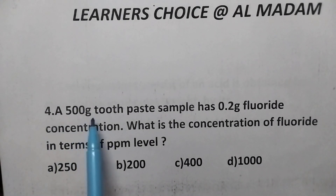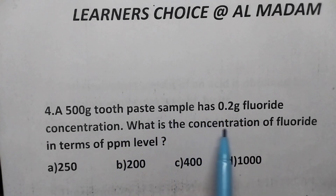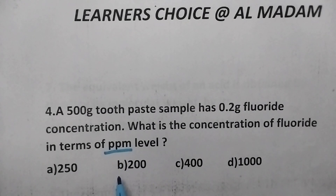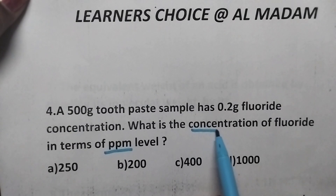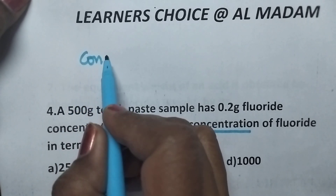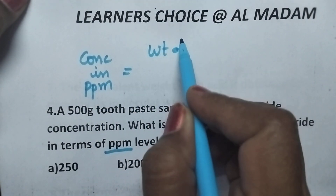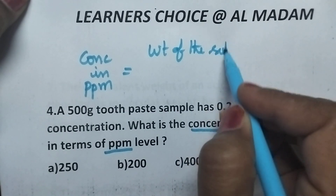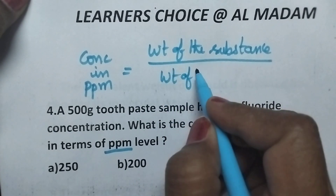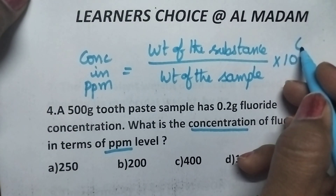A 500 gram toothpaste sample has 0.2 gram fluoride concentration. What is the concentration of the fluoride in terms of PPM level? PPM means parts per million. In order to calculate the concentration of any substance in PPM, we have to use the formula: concentration in PPM is equal to weight of the substance divided by weight of the sample into 10 to the power 6.